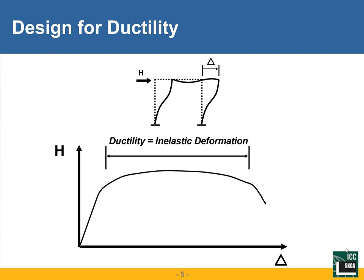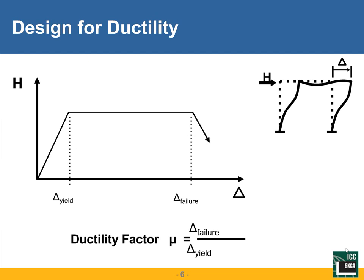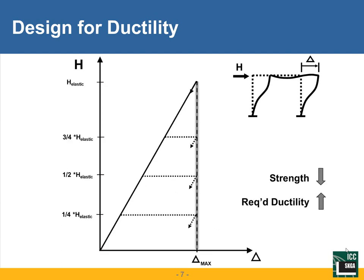The deformation before we start to lose stability in the frame — which might be called the deformation at failure — divided by the yield deformation delta-y, is known as the ductility factor. That describes the ability of our structural systems to undergo inelastic deformation prior to failure. This is really the key for seismic design, and we're going to draw a lot upon that when we talk about braced frames.